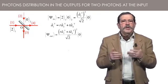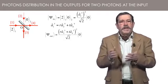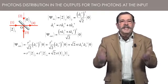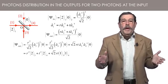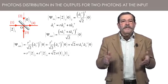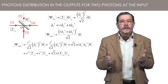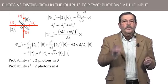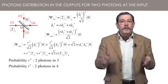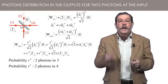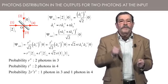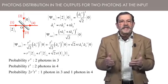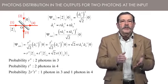You should continue the calculation yourself. Developing and using the result of the action of the creation operators a dagger 3 and a dagger 4 on vacuum, you will obtain an expansion on two photon states at the output. The square moduli of the coefficients in this expansion give the probabilities of the various outcomes. Probability r to the fourth to have two photons in output 3. Probability t to the fourth to have two photons in output 4. Probability r squared t squared multiplied by 2 to have one photon in 3 and one photon in 4.